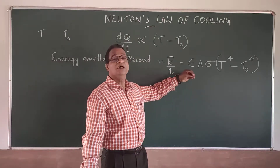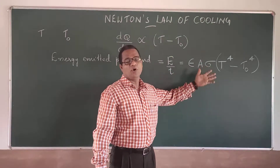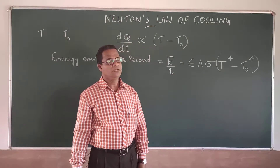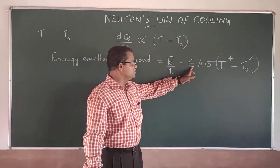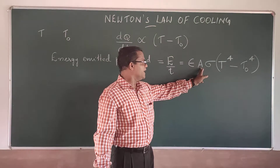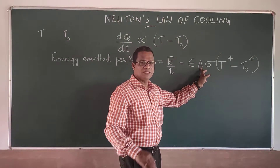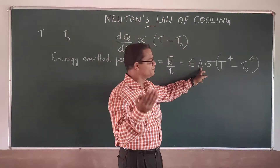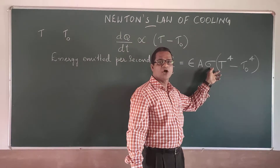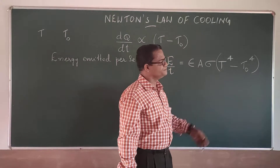This equation is not just for a black body — it is for any body. Here ε is the emissivity, A is the area of the surface of the body, and σ is Stefan's constant.